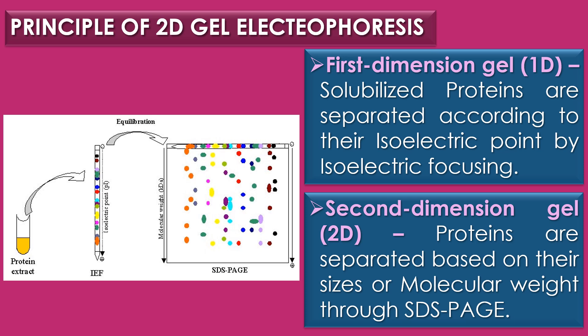In the first dimension, solubilized proteins are separated according to their isoelectric point by isoelectric focusing. In the second dimension, proteins are separated based on their size or molecular weight through sodium dodecyl sulfate polyacrylamide gel electrophoresis, or SDS-PAGE.